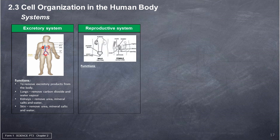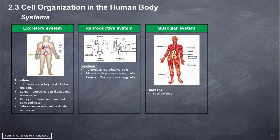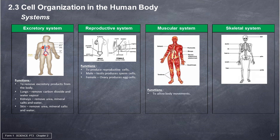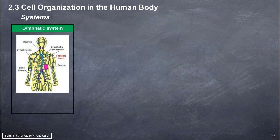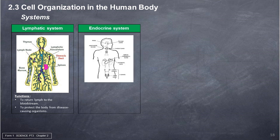Reproductive system: to produce reproductive cells — the testis produces sperm cells in males, and the ovary produces egg cells in females. Muscular system: to allow body movements. Skeletal system: to support the body, to protect internal organs, and to enable body movements. Lymphatic system: to return lymph to the bloodstream, and to protect the body from disease-causing organisms. Endocrine system: to produce hormones; to coordinate and control body responses to stimuli; to support life processes such as growth and reproduction.